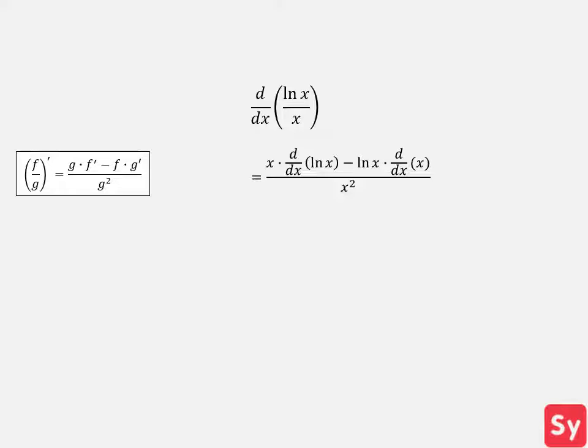Now we want to compute the derivative of ln of x first. Recall the derivative of ln of x, which is just 1 over x. Now we'll compute the derivative of x using the power rule. This equals 1. We plug in the derivatives back into the solution. Finally, we simplify this answer and get 1 minus ln of x all over x squared as our answer.